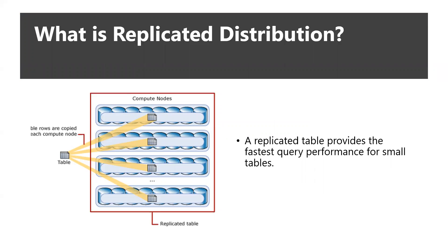What is replicated distribution? A replicated table provides the fastest query performance for small tables. A table that is replicated caches a full copy of the table on each compute node. Consequently, replicating a table removes the need to transfer data among compute nodes before a join or aggregation. Replicated tables are best utilized with small tables — specifically tables under 200 GB. For staging tables, round robin is best; for fact tables or large join tables, hash distribution is best.